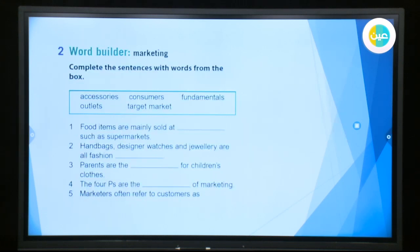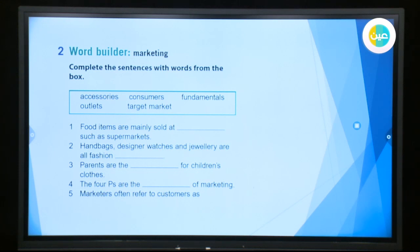The first exercise in this unit is word builder. It's about marketing. In such an exercise, when you have a word bank, before filling the gaps you have to read each sentence and understand the meaning in order to fill in the gap with the correct word. Here we have the first example: food items are mainly sold at such as supermarkets. The answer is outlets.